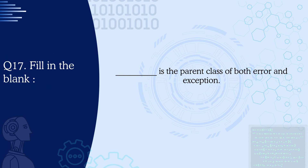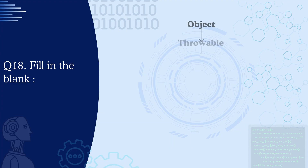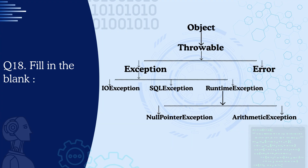Question 17: Fill in the blank — Throwable is the parent class of both Error and Exception. Question 18: Fill in the blank — Exception is the parent class of both runtime exceptions and compile-time exceptions. The hierarchy is: Object is the topmost parent class, Throwable is a child of that, then it has Error and Exception, and both compile-time and runtime exceptions inherit from the Exception class.